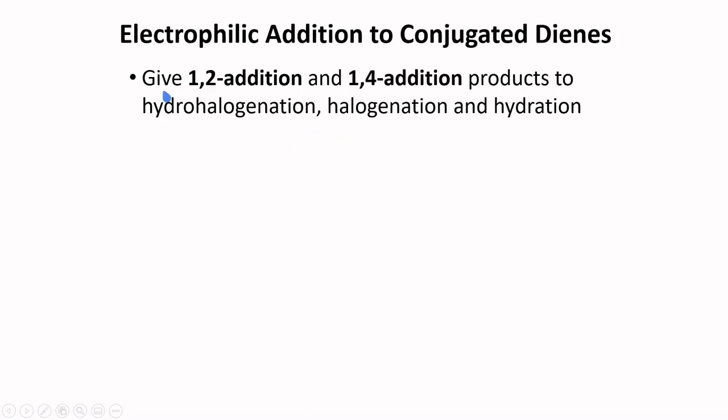As mentioned earlier, isolated alkadienes behave like regular alkenes, particularly during reactions. However, conjugated dienes react differently — they give 1,2-addition and 1,4-addition products in hydrohalogenation, halogenation, and hydration reactions.